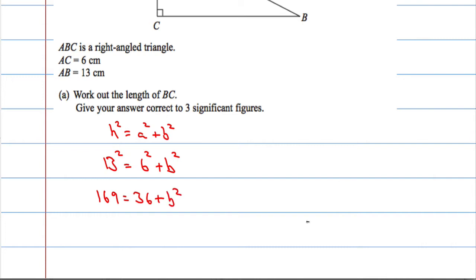I'm going to subtract 36 from both sides. That will give me 133 equals B squared.